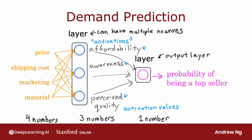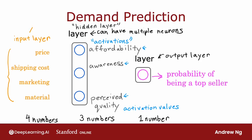To further simplify the notation and the description of this neural network, I'm going to take these four input features and write them as a vector x. We're going to view the neural network as having four features that comprise this feature vector x. This feature vector is fed to the hidden layer in the middle, which then computes three activation values — these three numbers. And these three activation values in turn become another vector, which is fed to the final output layer that outputs the probability of this t-shirt being a top seller. So that's all a neural network is: it has a few layers, where each layer inputs a vector and outputs another vector of numbers.